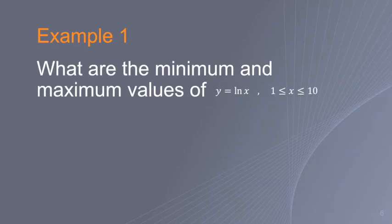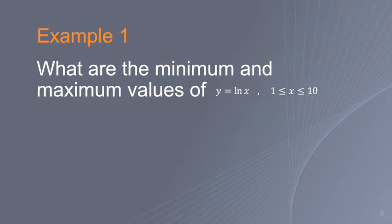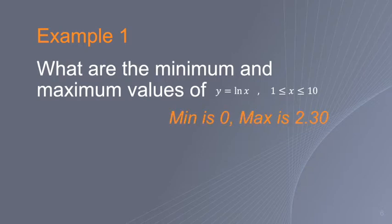Example: find the minimum and maximum values of y = ln x for 1 ≤ x ≤ 10. The first derivative is 1/x. Setting it to zero gives no stationary point — this function is asymptotic. So we plug in the domain endpoints. At x = 1, y = ln 1 = 0 (minimum). At x = 10, y = ln 10 ≈ 2.30 (maximum).